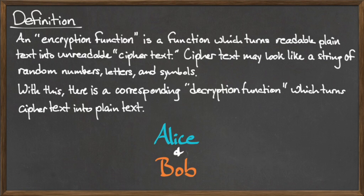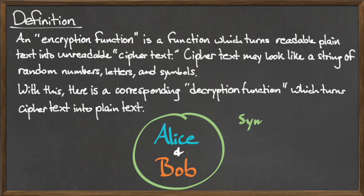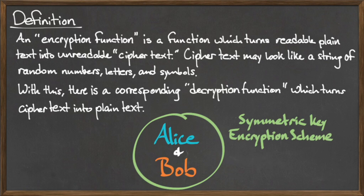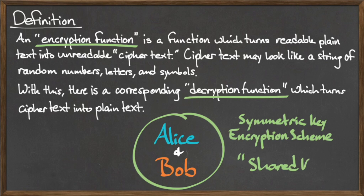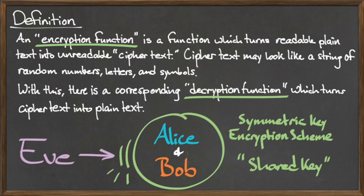In a symmetric key encryption scheme, both the sender, Alice, and the recipient, Bob, use the same shared key to lock and unlock their messages. This shared key acts as a barrier protecting the message from the eavesdropper.